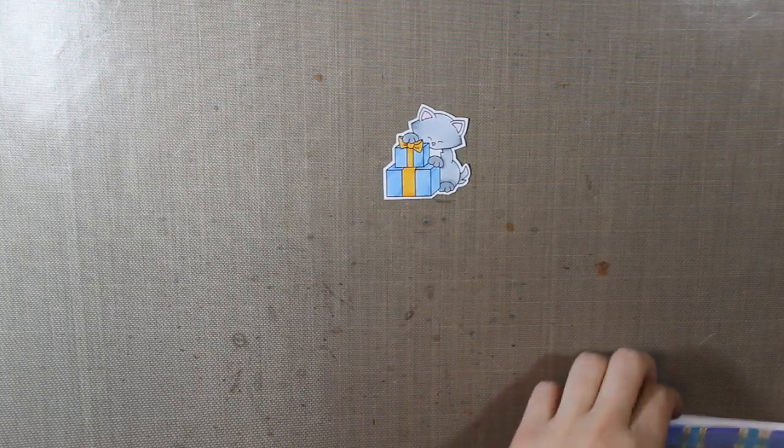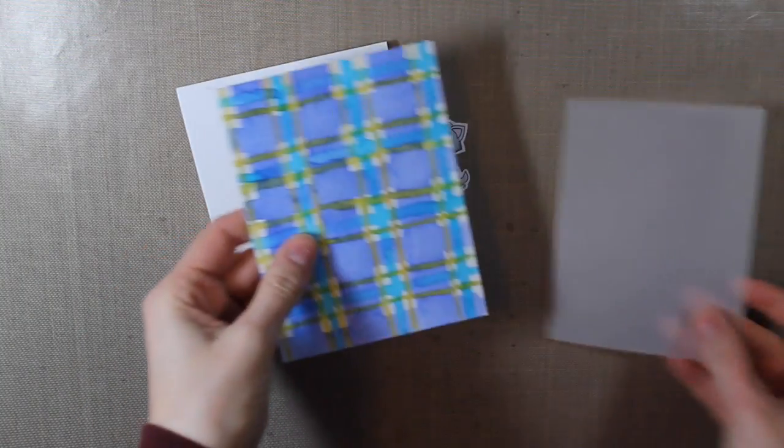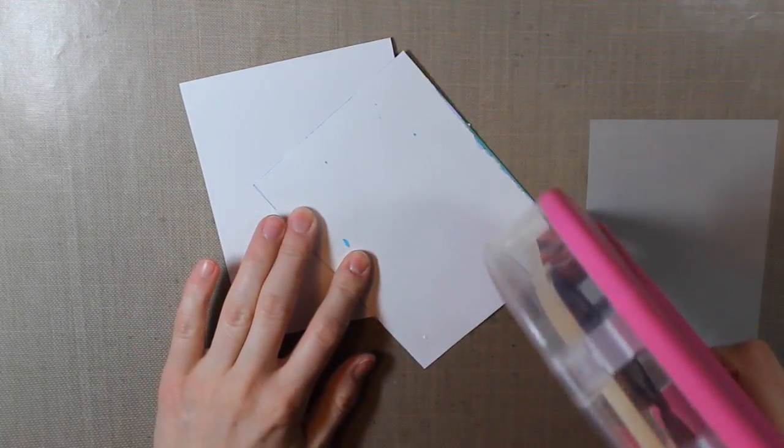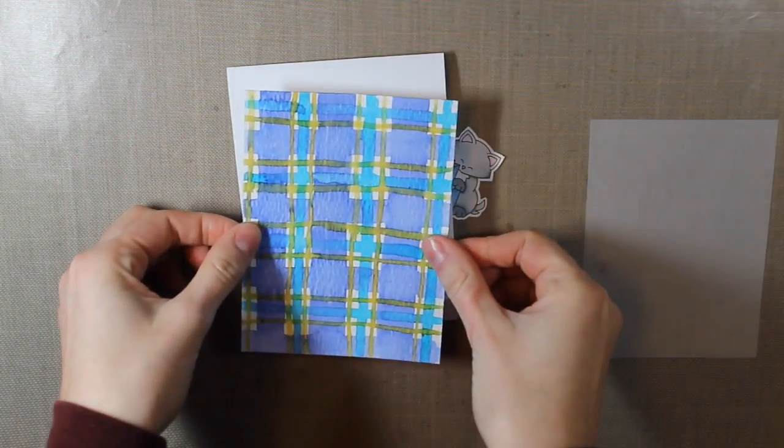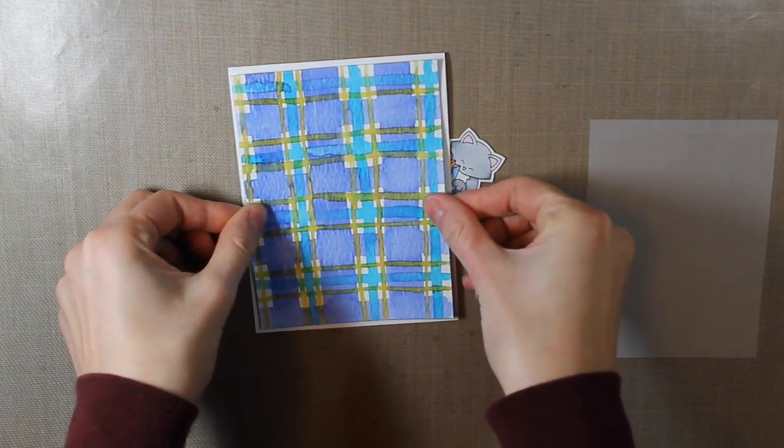So I fussy cut my image out. And now I'm going to assemble my card. So first I have my plaid background. And I'm going to attach this to a white A2 size card base. And I'm just using my ATG gun to adhere those together.